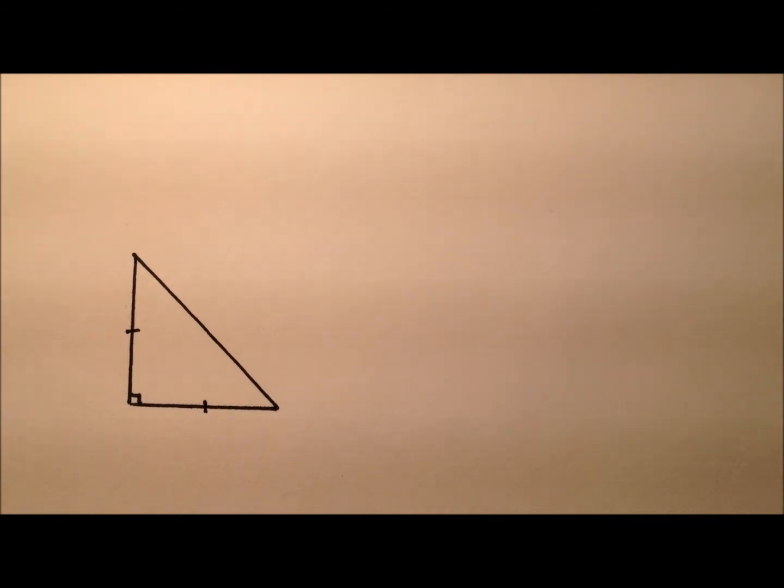In this video, I want to show you how we can start with an isosceles right triangle and find the exact values for the sine, cosine, and tangent all of 45 degrees.